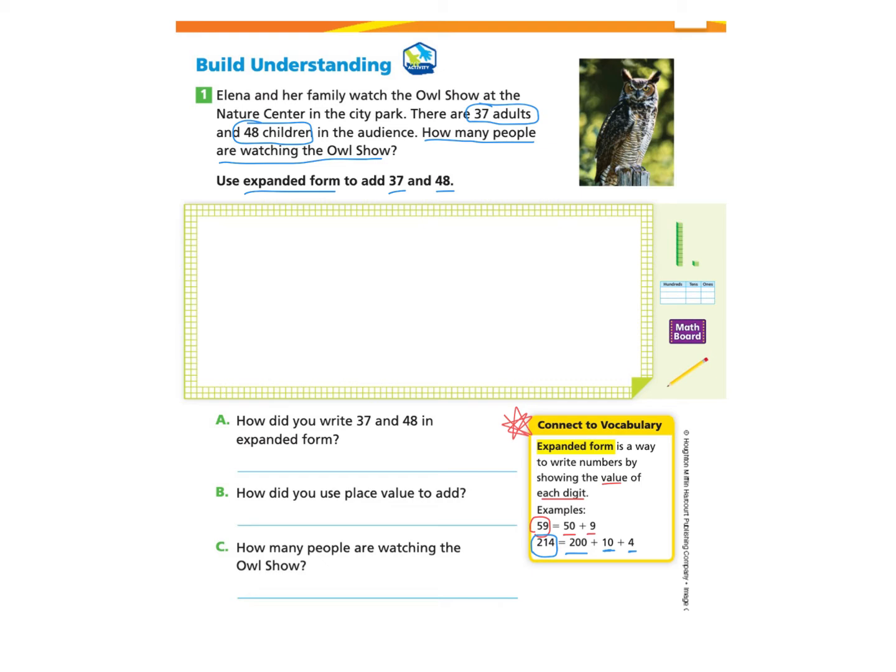Let's take a look at our word problem. They would like us to add 37 and 48 using expanded form. So we will start with 37, and I know that there are three groups of 10 in 37 and 7 ones. Those are my place values. So I can write that 37 really means 30 plus 7.